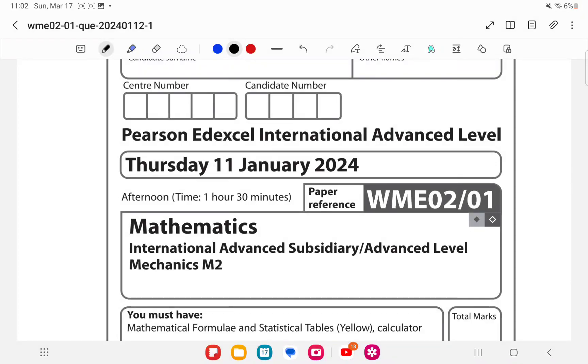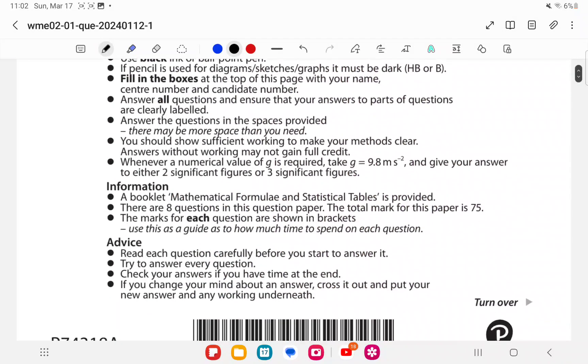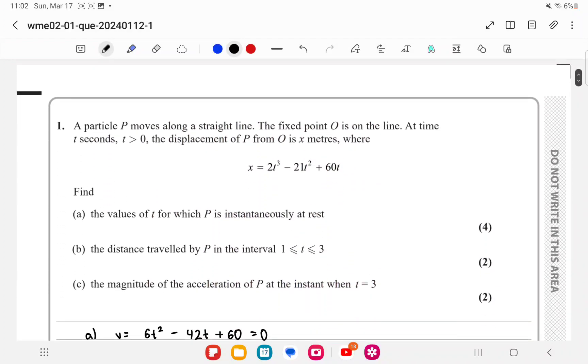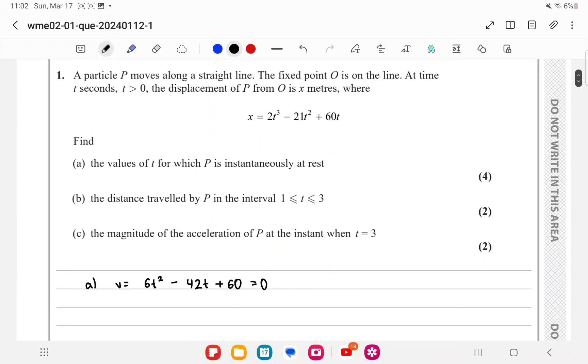AL January 2024 M2 paper. Moving to question one, we are given x in terms of t, a function of x which is the displacement in terms of t the time. In part a we need to find the values of t for which P is instantaneously at rest.